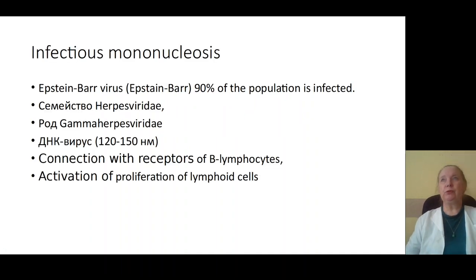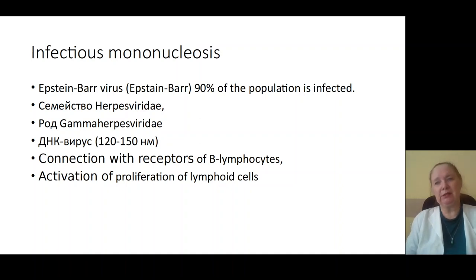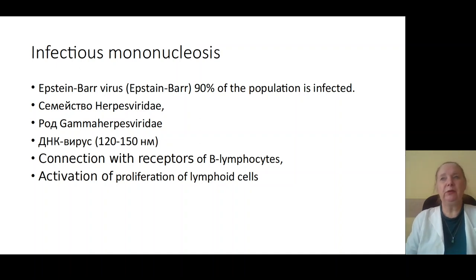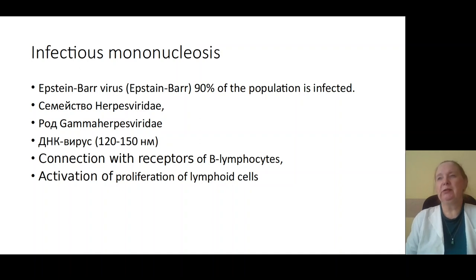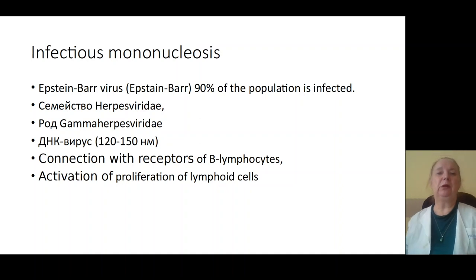Infectious mononucleosis is a contagious infection caused by the Epstein-Barr virus with an aerogenic mechanism of transmission, which causes the clinical picture of fever, intoxication, syndrome of tonsillitis, lymphadenopathy, and hepatosplenomegaly.